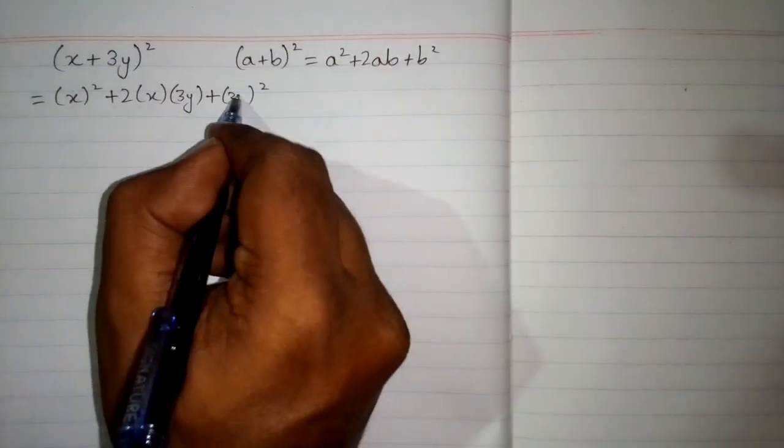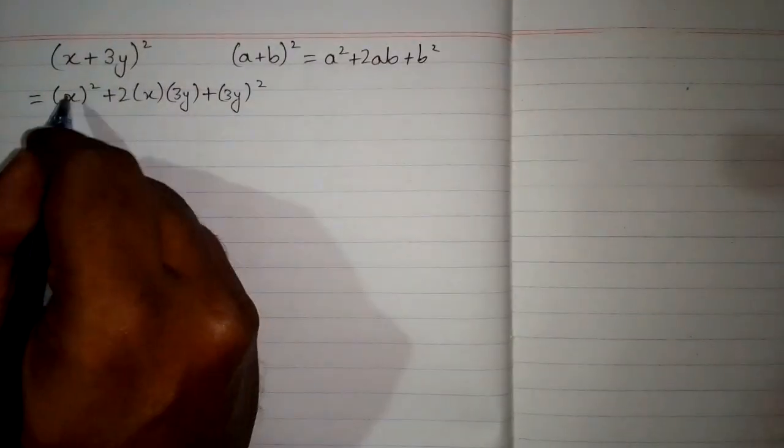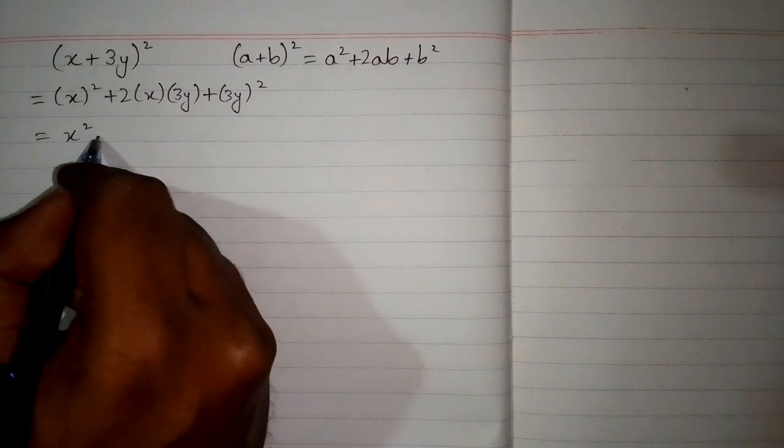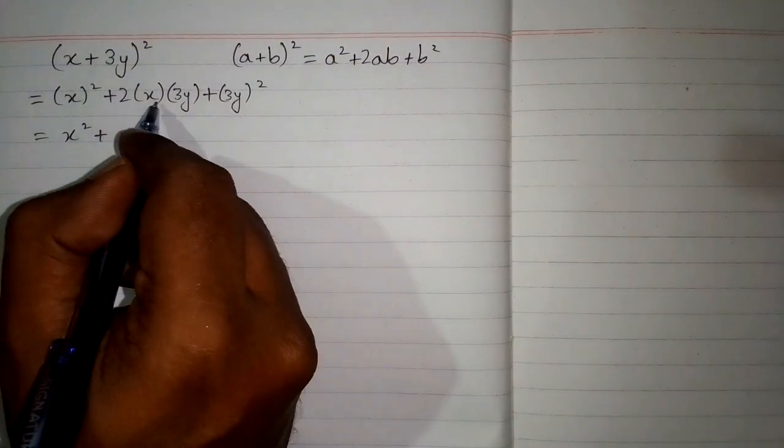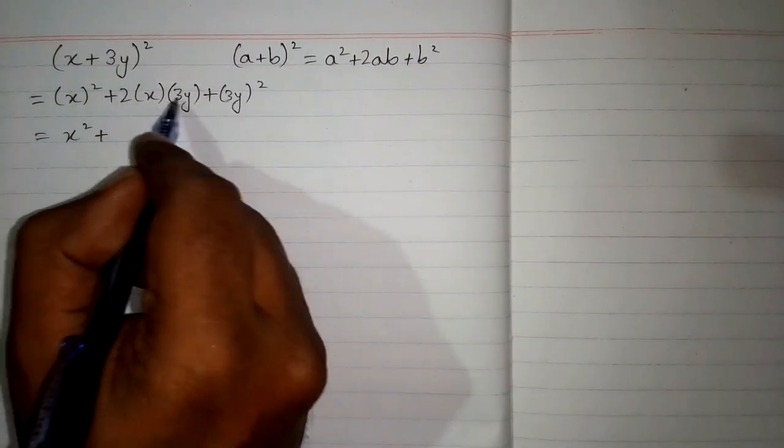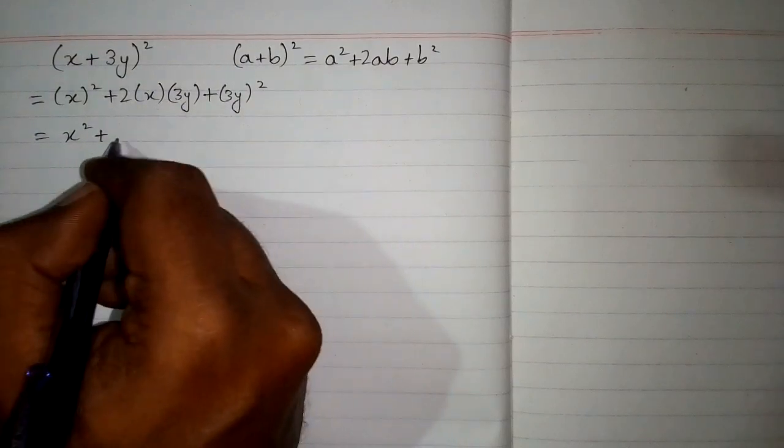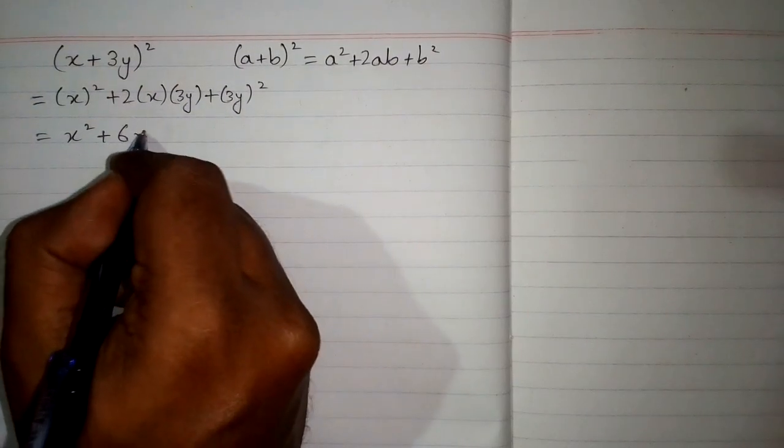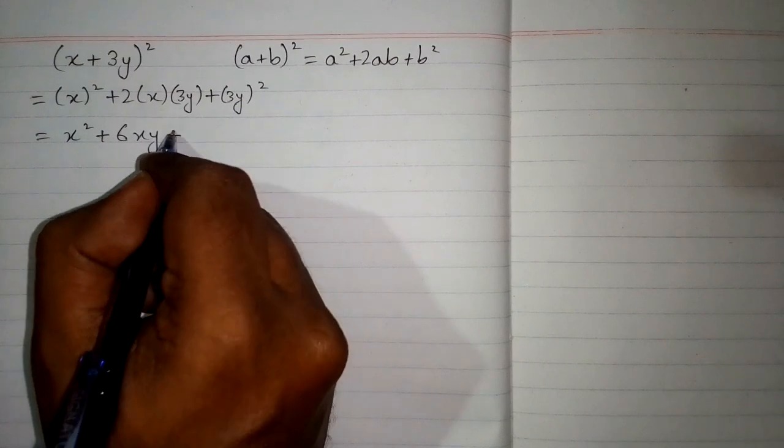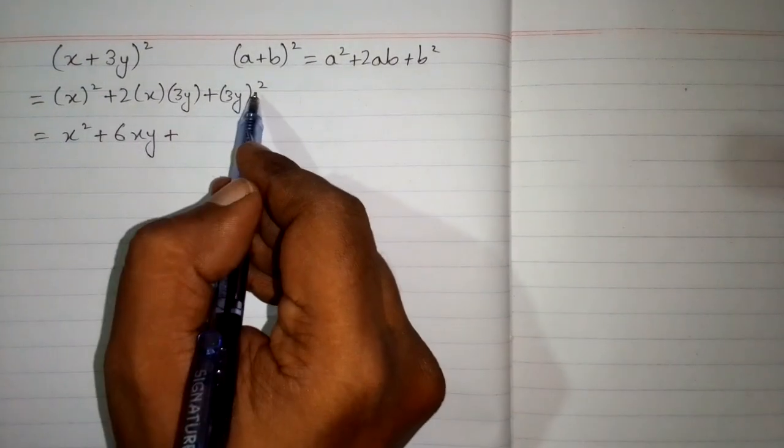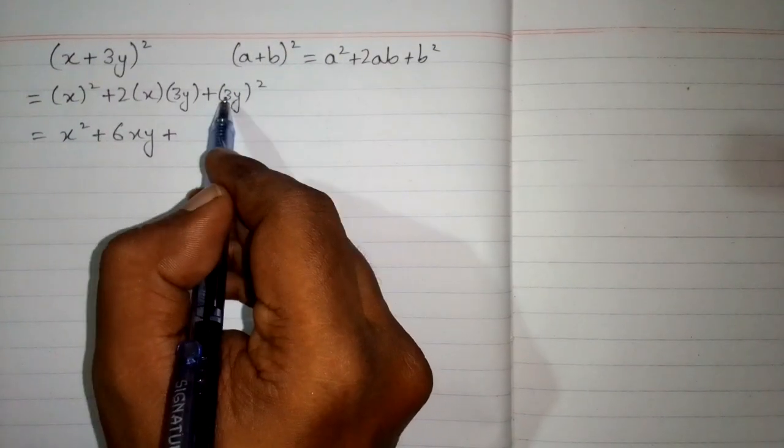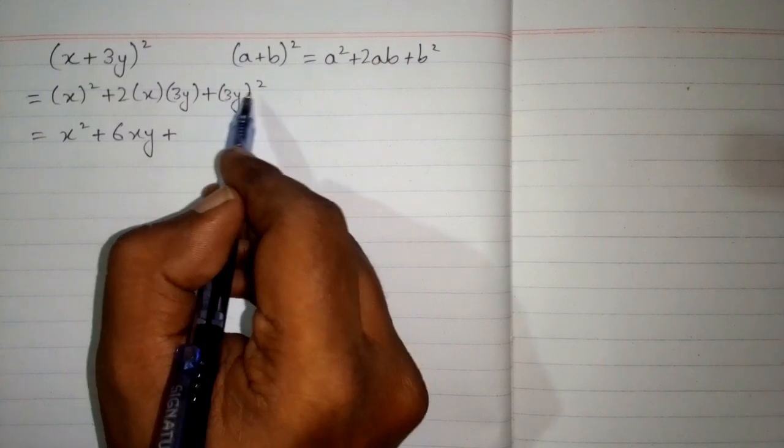Now square of x is x², and 2 times x times 3y—we will multiply the coefficient, so 2 multiply by 3 is 6xy. Then plus, we will take the square of both things inside the bracket.